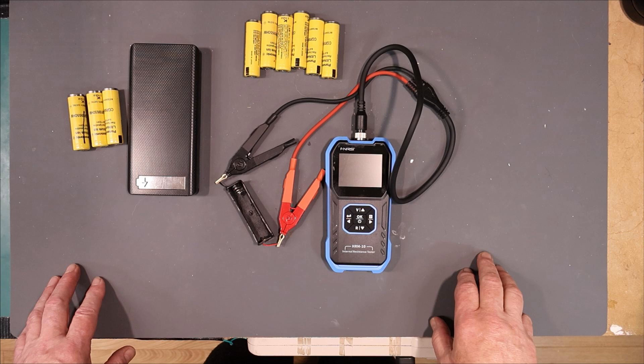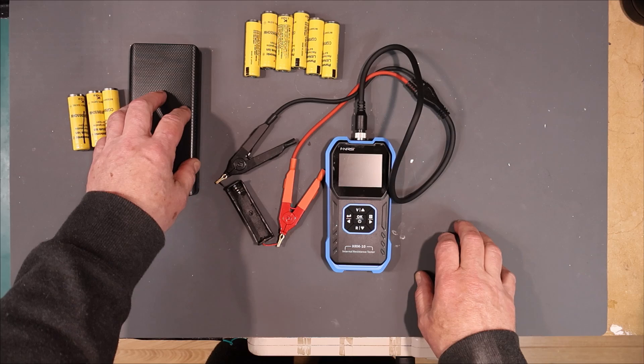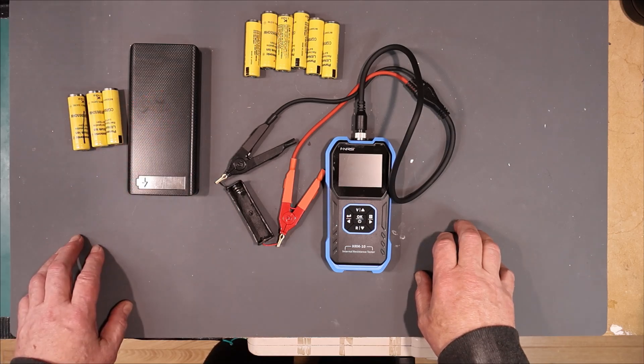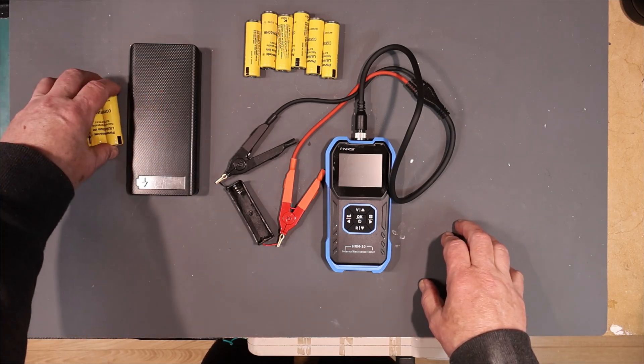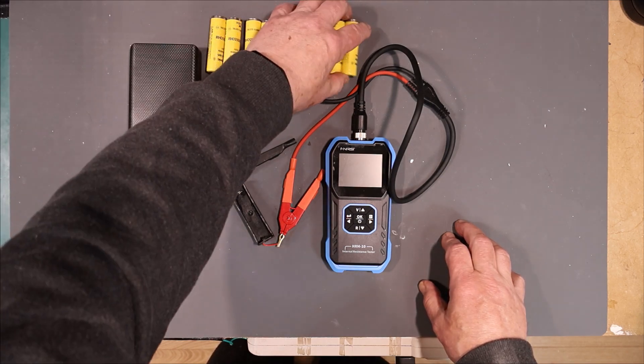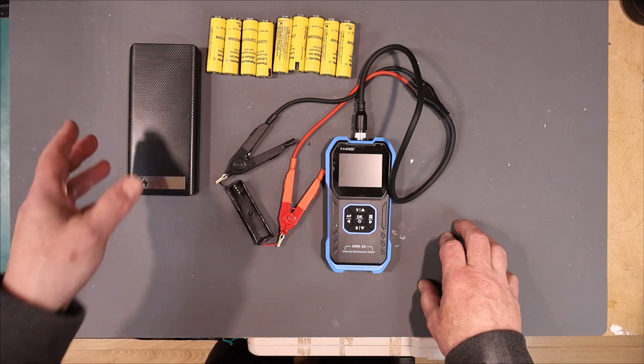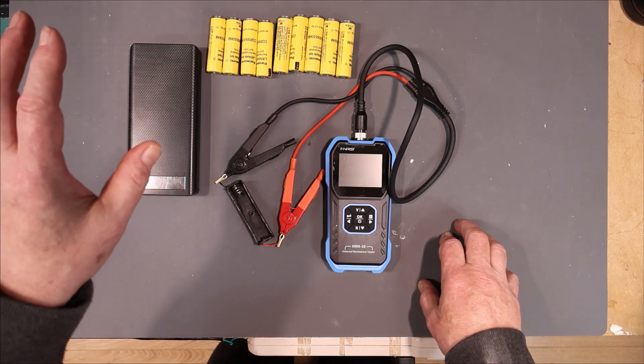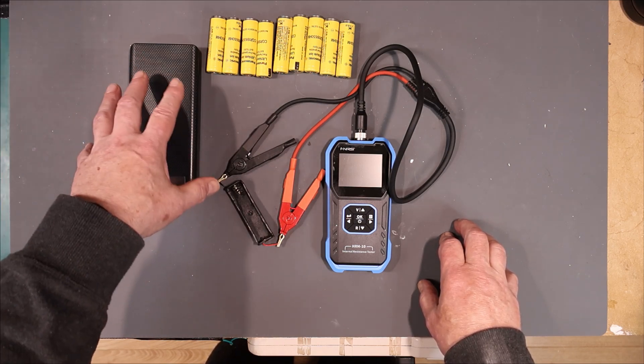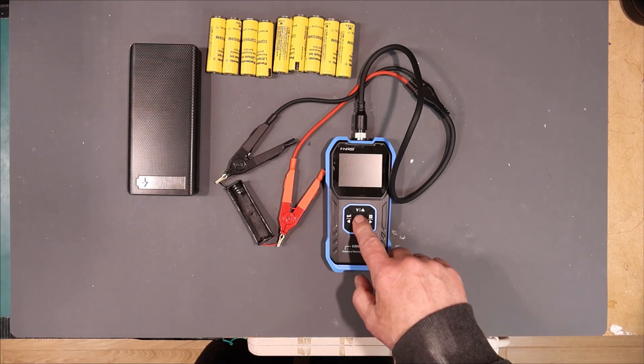In this first little project, what I'm going to do is use this Furnissi HR-M10 internal resistance meter to help me build up this simple power bank using these reclaimed batteries. They've all been tested for amp-hour capacity and about three weeks ago were charged up to 4.2 volts. Now I want to ensure that they're all pretty much the same voltage and are close in internal resistance before I install them in the bank.